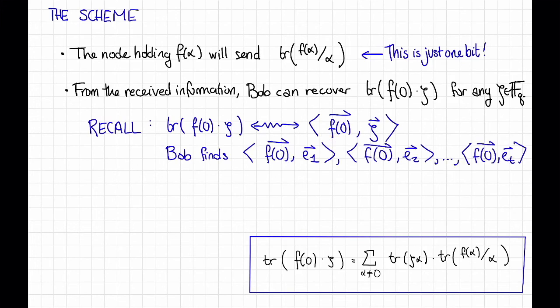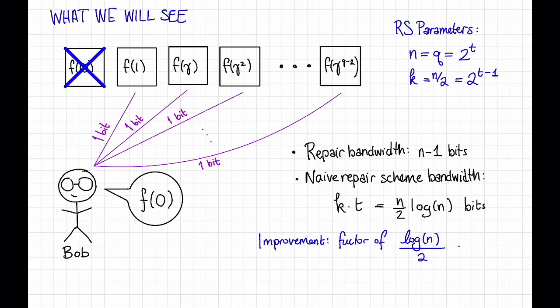Concretely, Bob can recover the inner product of f with some basis, let's say the standard basis e1 e2 up to et for f2 to the t over f2, and that will give him every single coordinate of the vector version of f of 0, and then he can translate that back to the field element f of 0. That's a little bit hand wavy, especially with the precise details of this squiggle squiggle, but it turns out that this can be made precise and can even be done quite efficiently. So this gives us a scheme to do this that I claimed at the beginning.